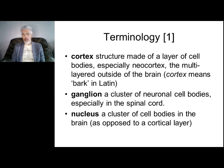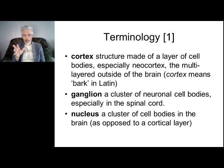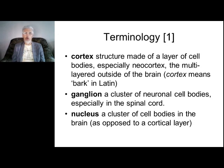A ganglion is a cluster of neuronal cell bodies situated in the spinal cord. The same thing — a cluster of neurons — situated in the CNS and in the brain is called a nucleus.